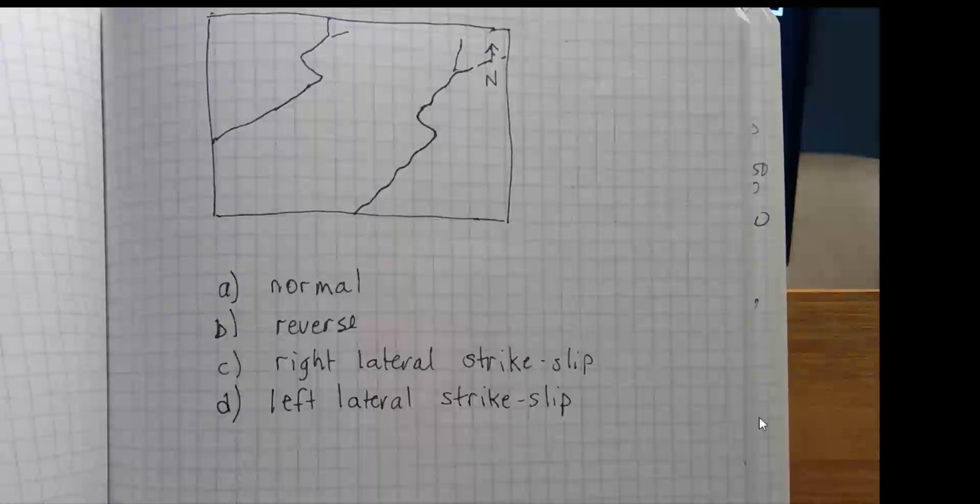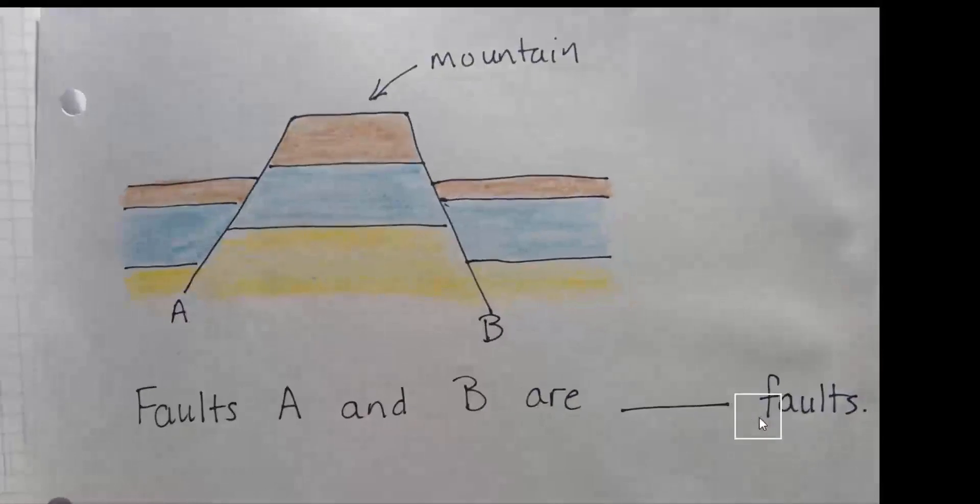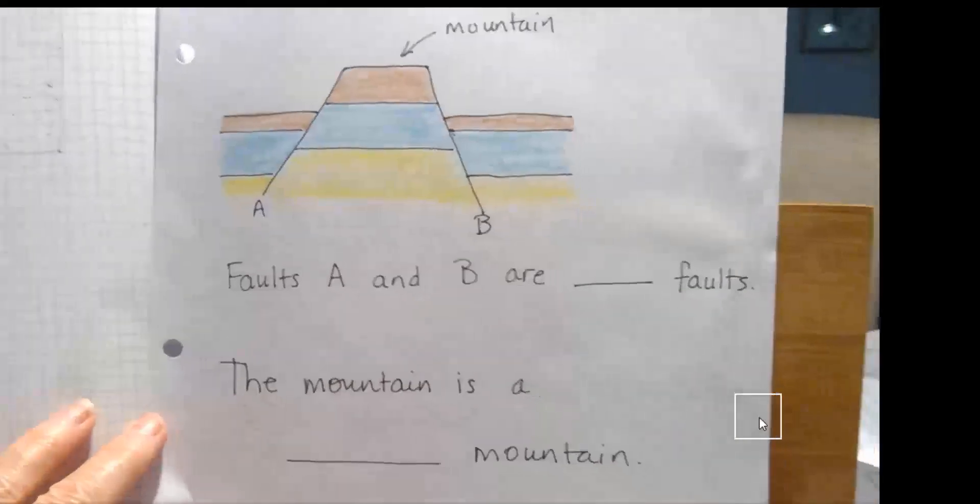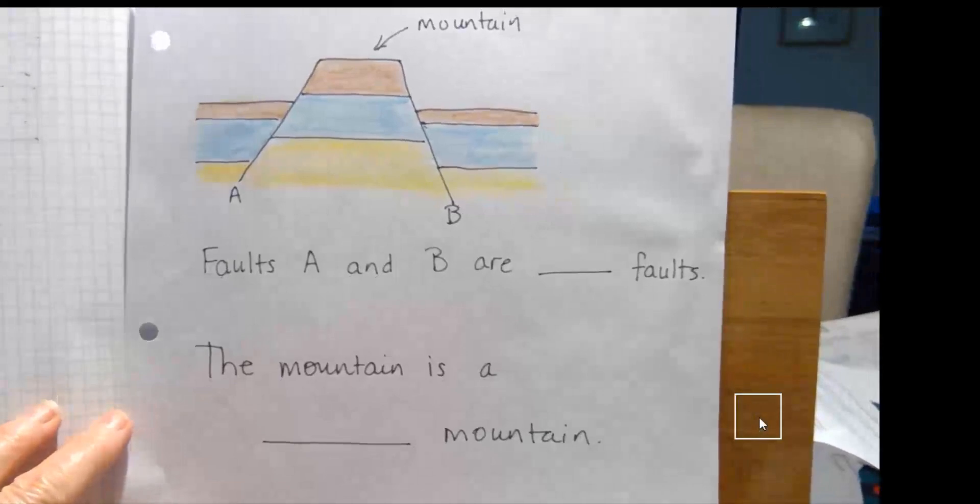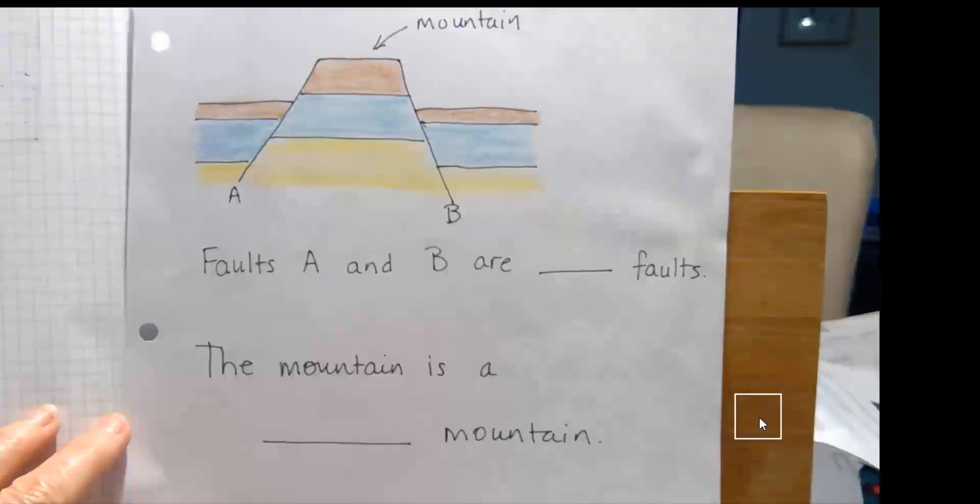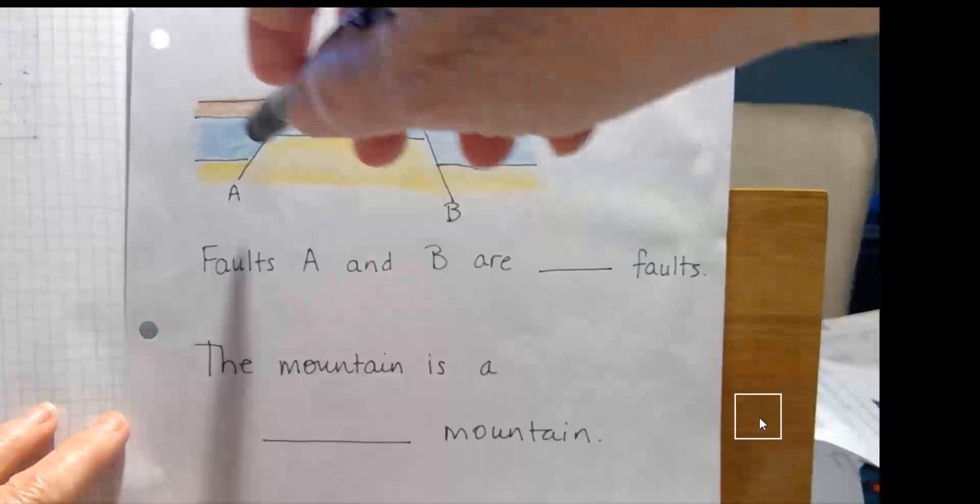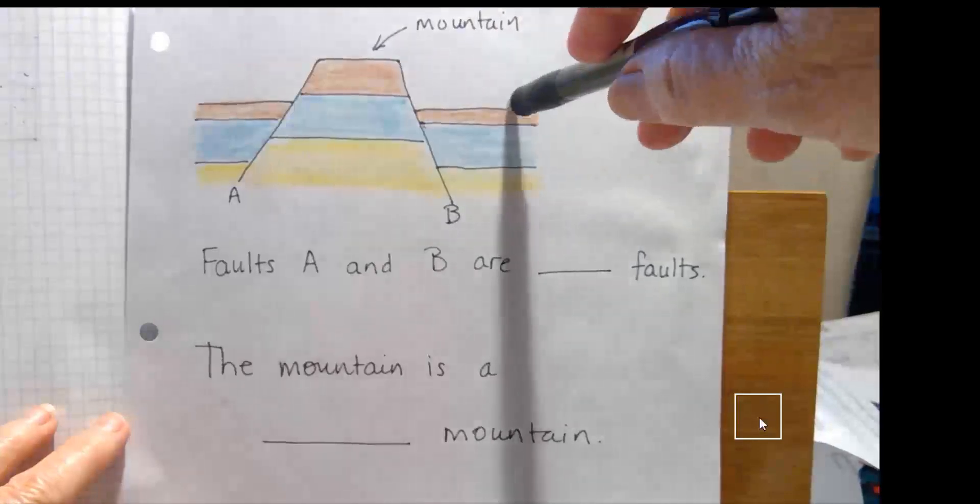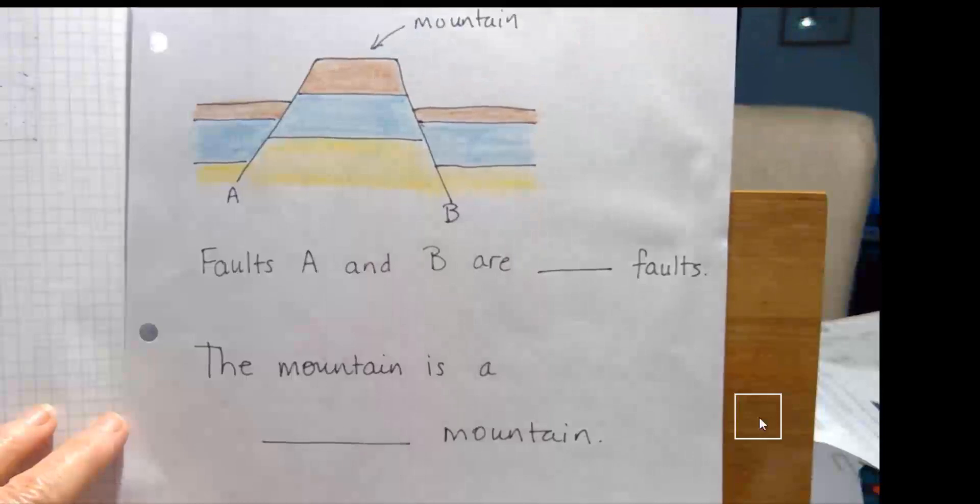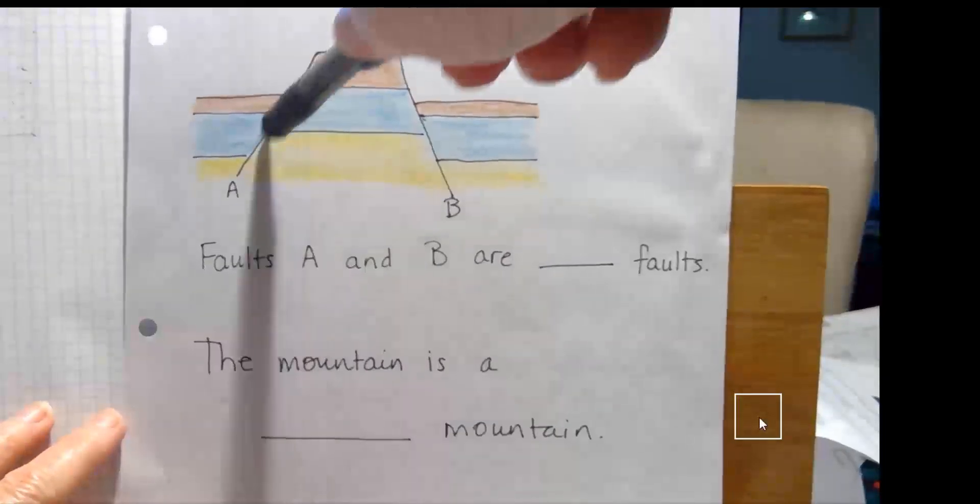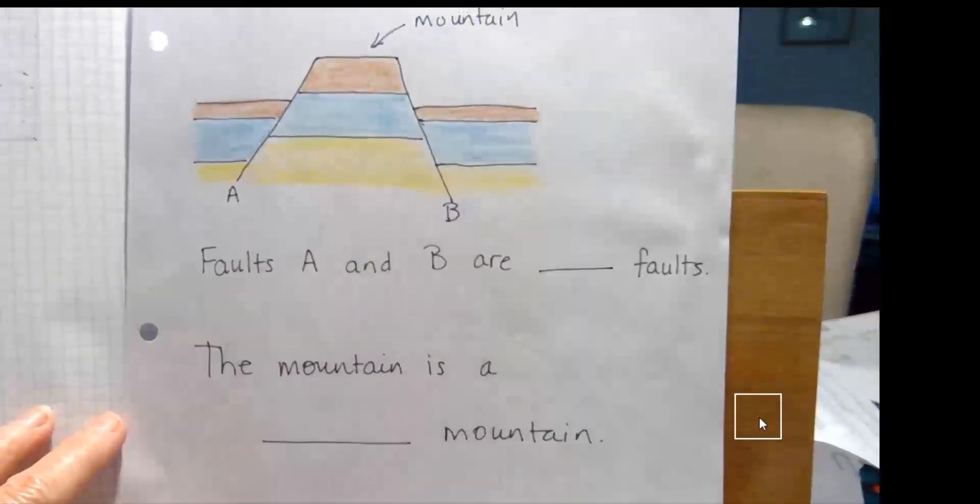Let's see if we have one more question. I have one right here. It's a two-parter. We have two faults. We have two faults and we're showing a cross-section view. This is the land surface. This is a mountain here. And the mountain is bounded by faults A and B. They're both the same kind of fault. What kind is it? Are they normal faults, reverse faults, left lateral strike slip faults, or right lateral strike slip faults?